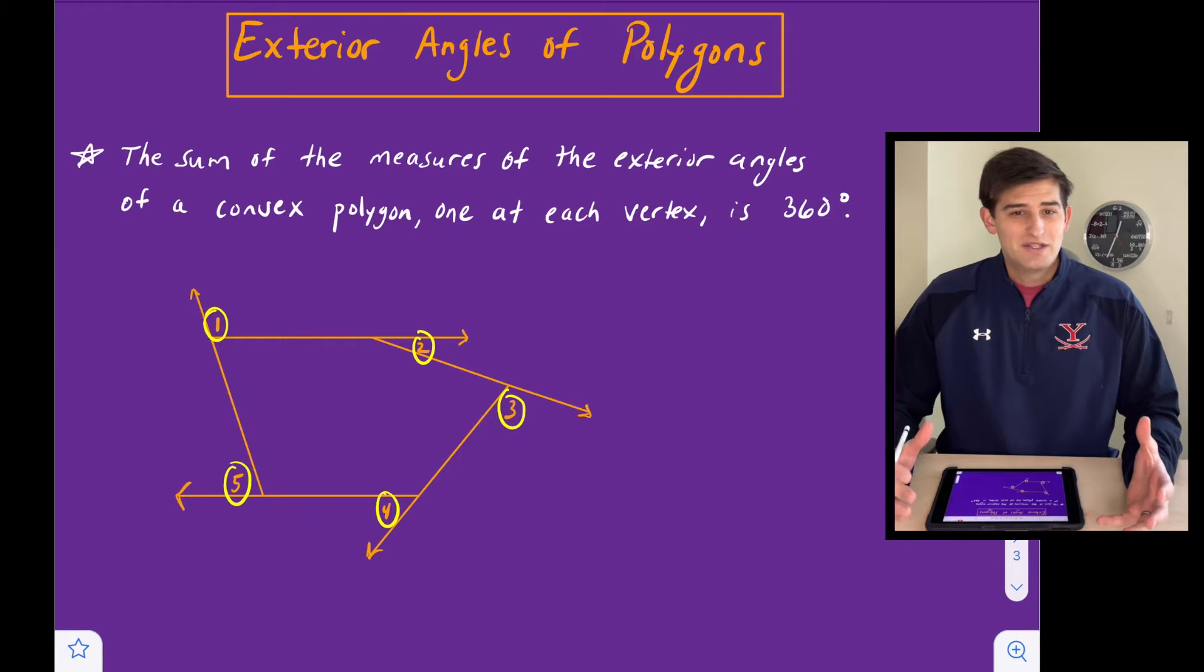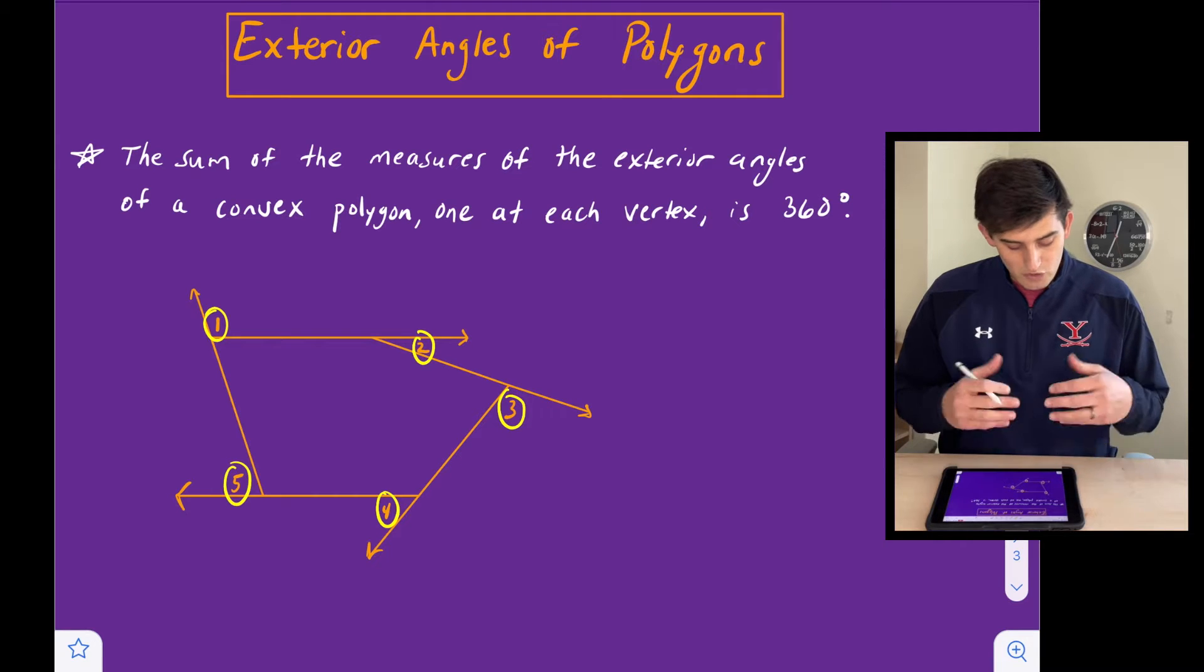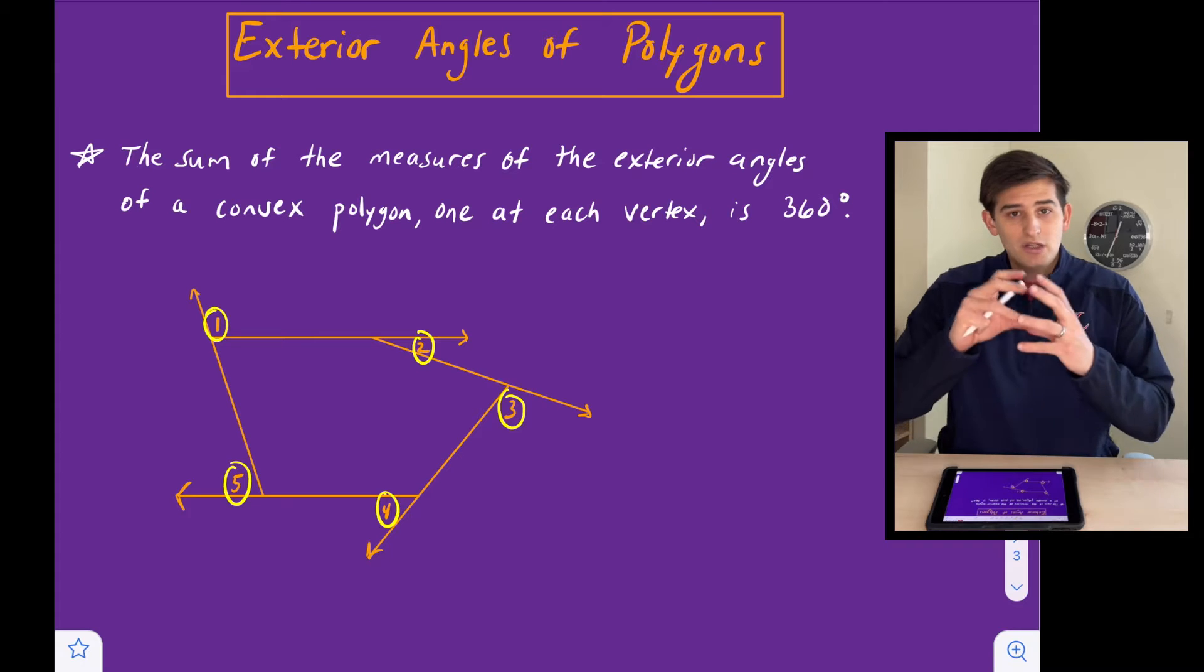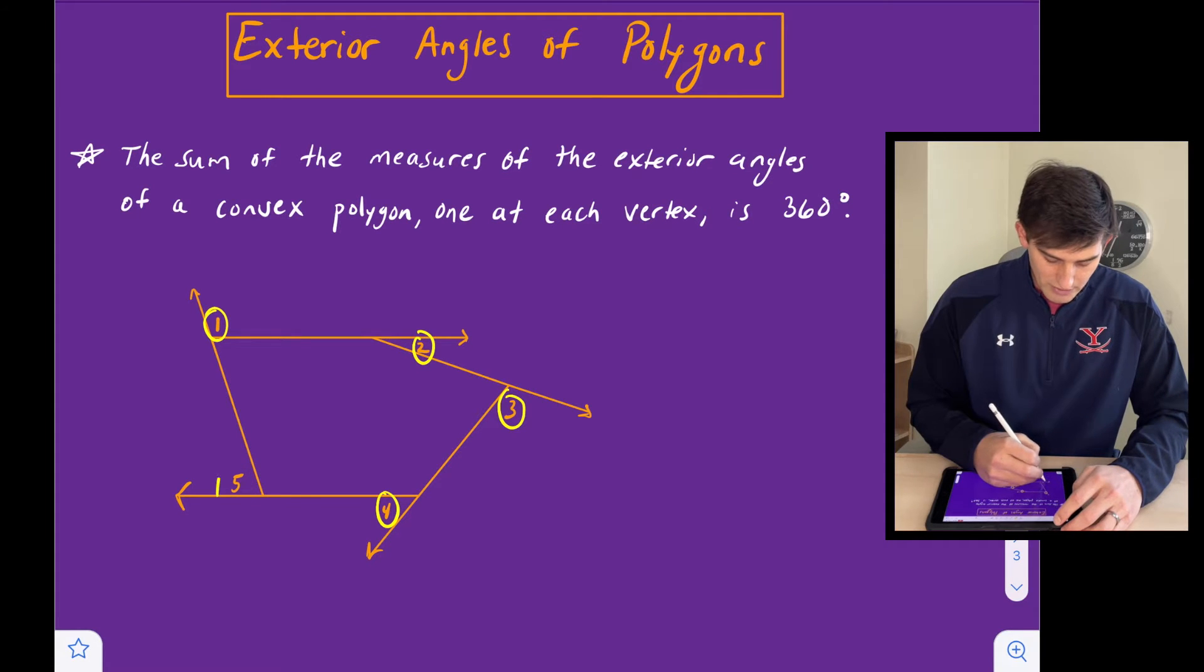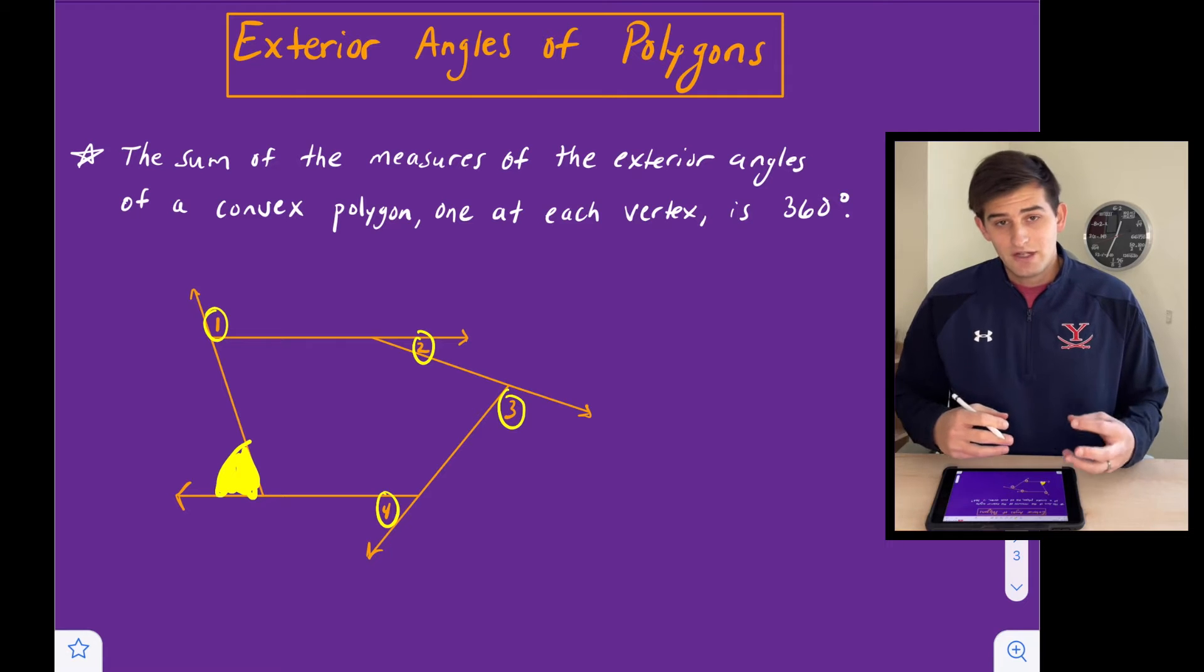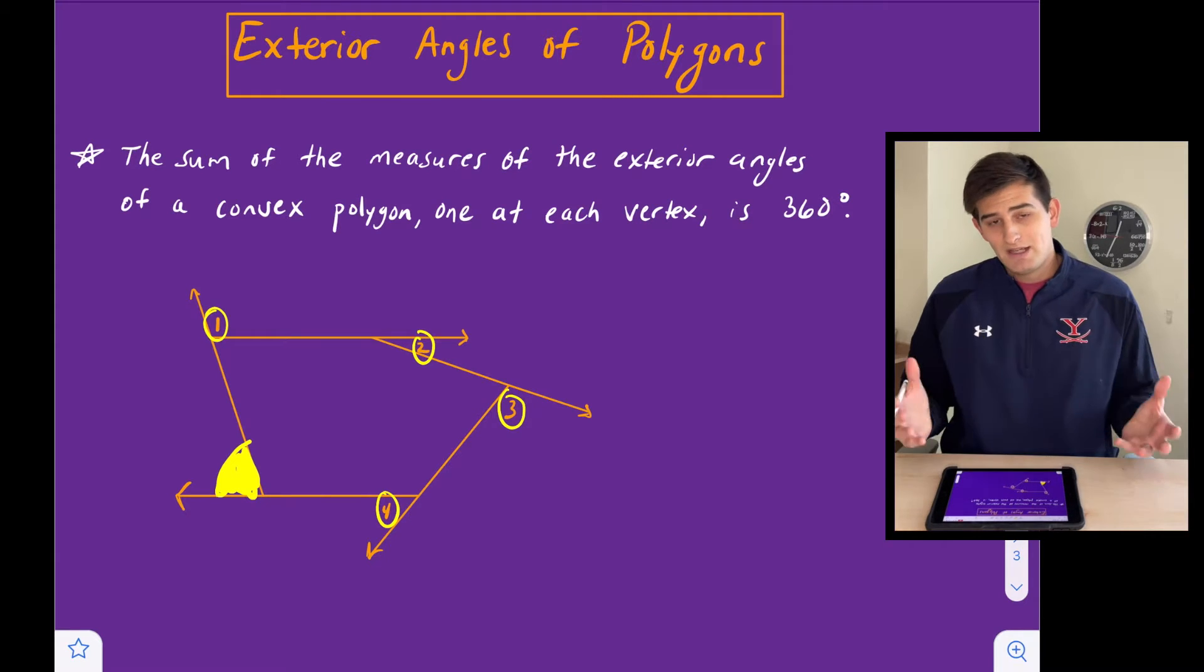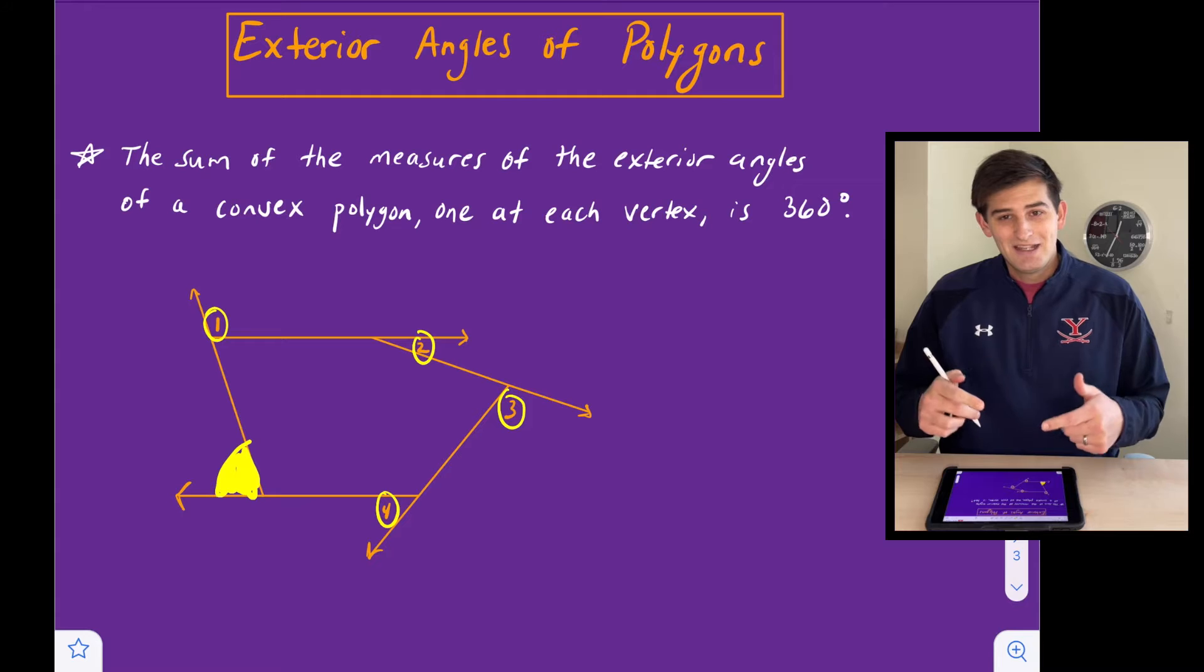So why is this 360 degrees? Well, if you actually draw any polygon you want, draw one similar to what you see on the screen right here, and then you color in the arc of where the exterior angle is located—like for example on angle five if we drew that right there and color that in—and then you take some scissors and cut that out, and you do that for all the other exterior angles, they should arrange together to form a circle. And we know that the angles of a circle, or the measure of the circle, is 360 degrees. So check out this video I actually did that and let me know what you think.